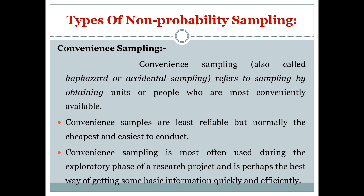Convenience sampling — also called haphazard or accidental sampling — refers to obtaining samples from those most conveniently available. For example, going out and taking a sample from the first five people seen. If you wanted to see how many people in a city are smoking and took a sample of 20 from your own street where none were smokers, you cannot generalize that nobody in the city smokes. Convenience samples are least reliable but normally the cheapest and easiest to conduct, most often used during the exploratory phase of research.